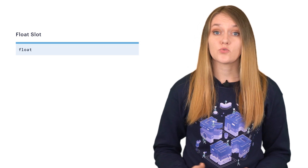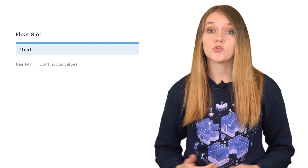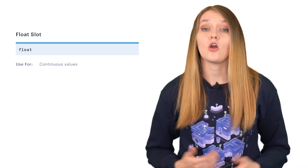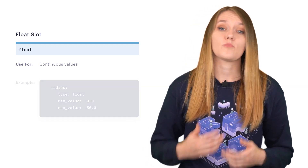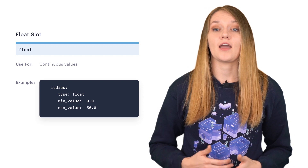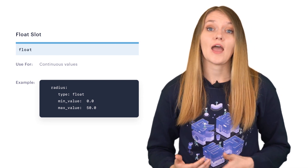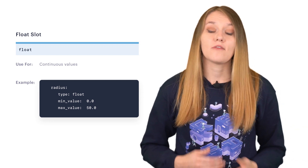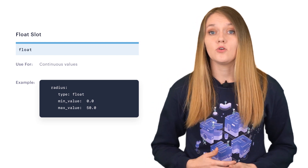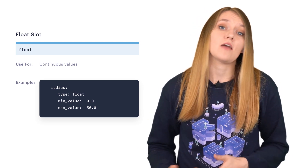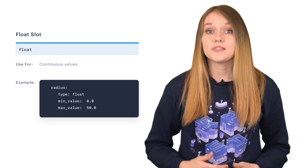Float slots are useful to store continuous information like float numbers — here again, both the presence and the value of the slot matter. With the min_value and max_value parameters you can define the lowest and highest possible values of the slot. Everything above max_value will be set to that specified max value, and everything below min_value will be set to the specified min value.